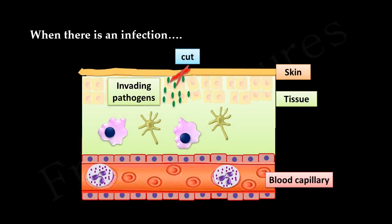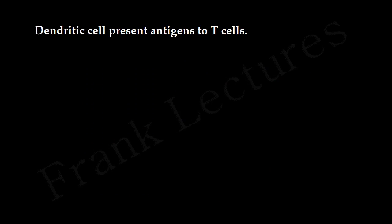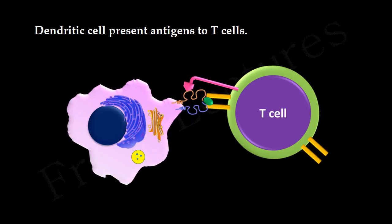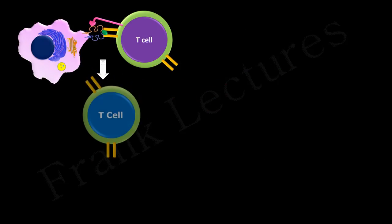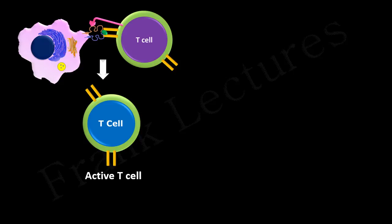Now let's see what happens when there is an infection in the body. Macrophages and other antigen presenting cells such as dendritic cells are present at the site of infection. A dendritic cell engulfs the pathogen at the site of infection and migrates to lymph nodes, where it presents antigens to T-cells by a process known as antigen processing and presentation. T-cells recognize antigens on the surface of antigen presenting cells and get activated. This activation of T-cells requires two signals, the details of which we will see in the next video lecture.